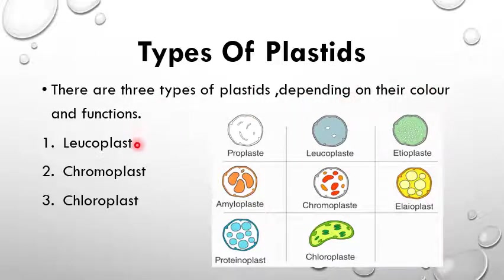The three types are: leucoplasts, which are colorless; chromoplasts, which are colorful; and chloroplasts, which are green in color.